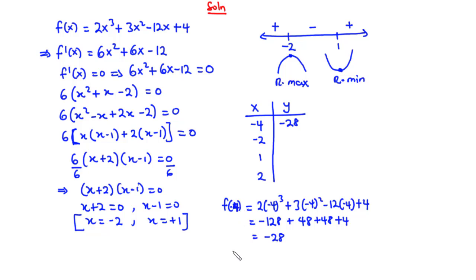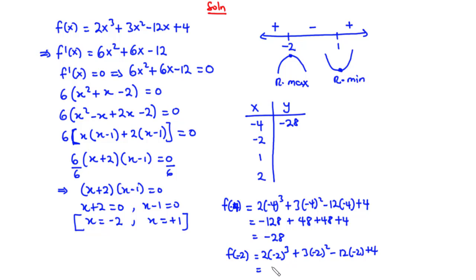For f(-2): 2(-2)³ + 3(-2)² - 12(-2) + 4. (-2)³ = -8, so 2 times -8 is -16. (-2)² = 4, so 3 times 4 is 12. -12 times -2 is 24, plus 4. So -16 + 12 + 24 + 4 = 24. So f(-2) = 24.